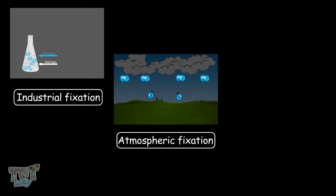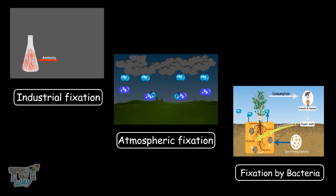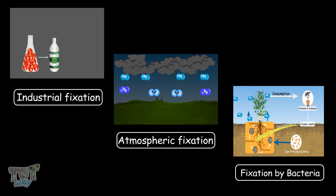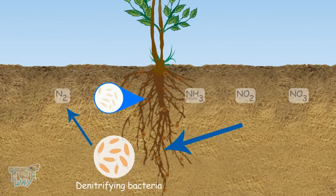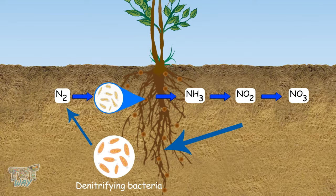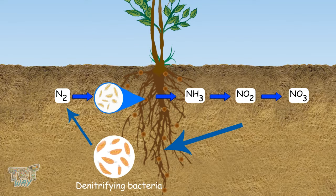To summarize the three methods: industrial fixation, atmospheric fixation, and fixation by various types of bacteria — nitrogen-fixing bacteria present in the root nodules of leguminous plants, and various types of denitrifying bacteria present in the soil. This is how nitrogen circulates in the atmosphere.